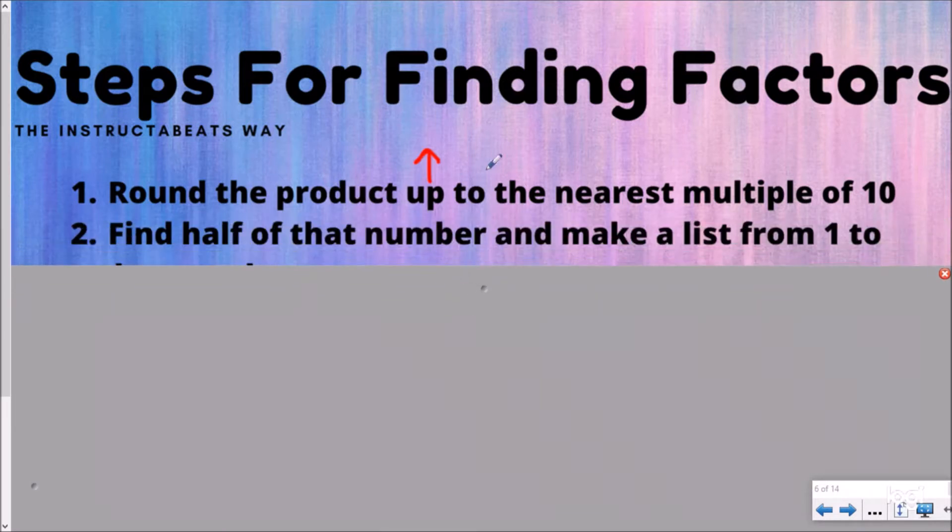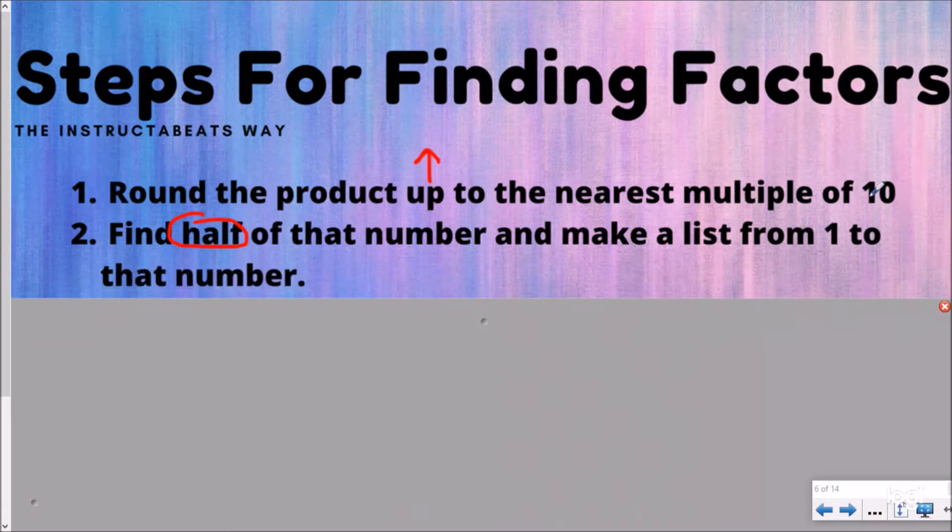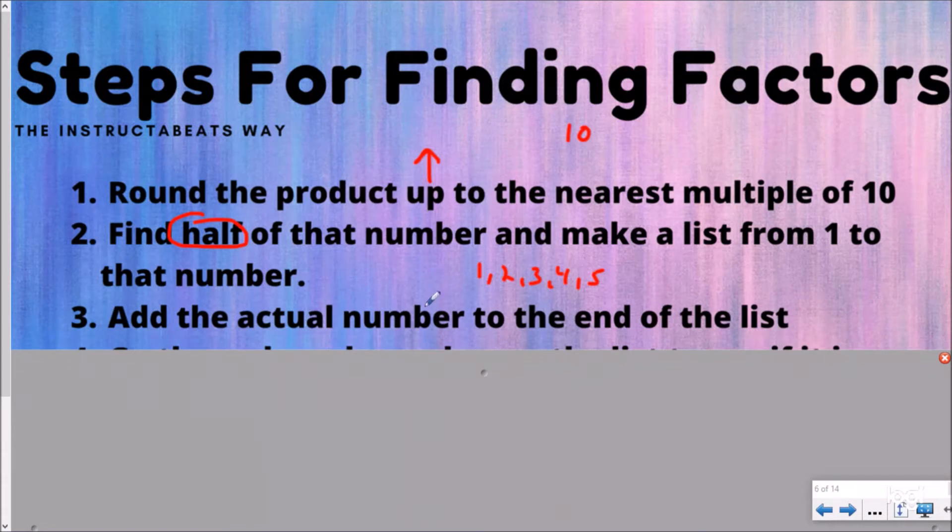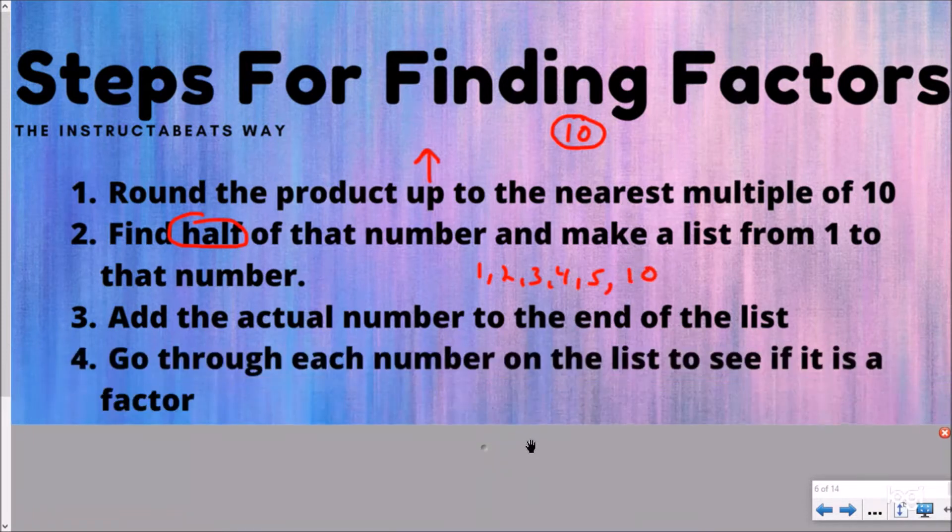After you round that number up to the nearest multiple of 10, you want to find half of that number and then make a list from 1 to that number. For example, half of 10, if I want to find the factors of 10, half of 10 would be 5. So I'm going to say 1, 2, 3, 4, 5. I'm making a list. Then we want to add the actual number to the end of this list. So if I'm trying to find the factors of 10, my last number would obviously be 10. Then I'm going to go through each number on the list to see if it's a factor.